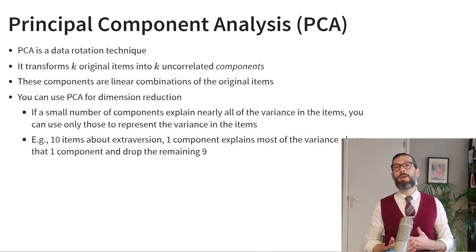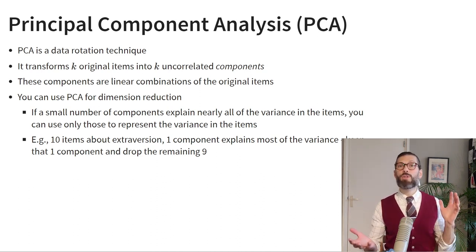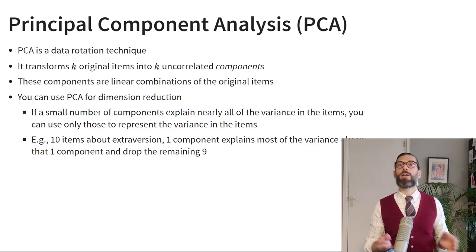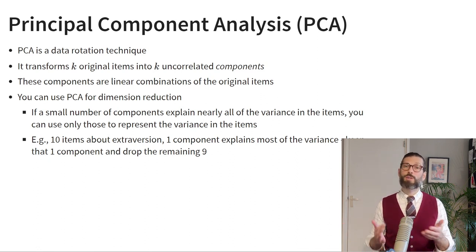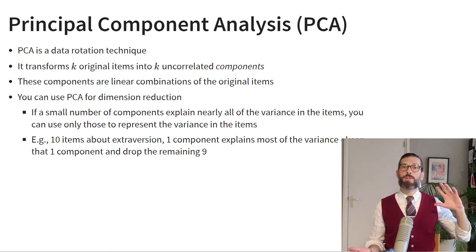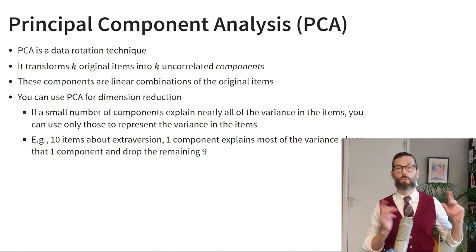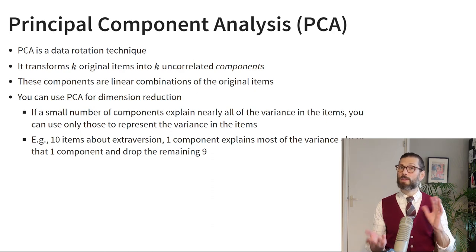By extension, if we have ten questions all measuring participants' extraversion and we rotate those ten dimensions using principal component analysis and find that just one dimension explains most of the variance in all ten questions, then we could drop nine of the dimensions and keep just one. We've reduced the dimensionality of the data from ten dimensions to just one. But remember that principal component analysis just rotates the data — dropping dimensions is a second step. So if we start with k variables and rotate them, we still have k components, and those components are linear combinations of the original k variables, so no information is lost.